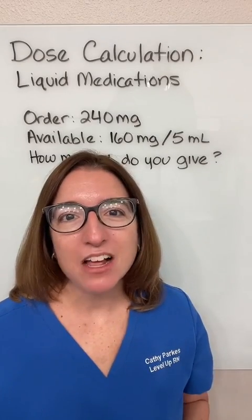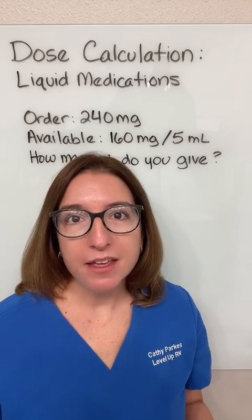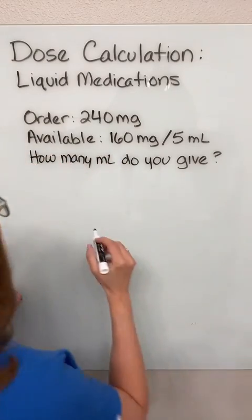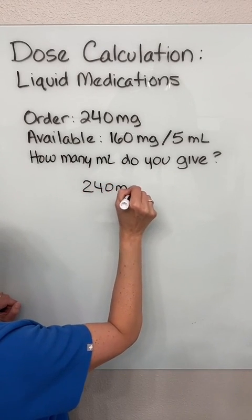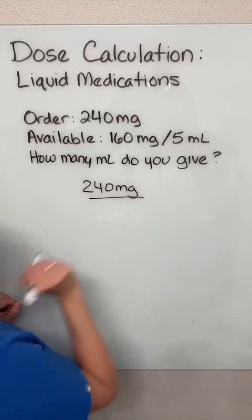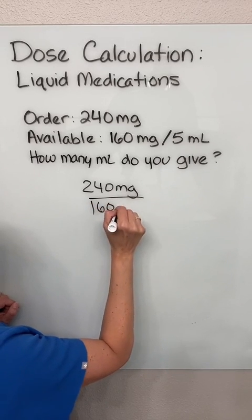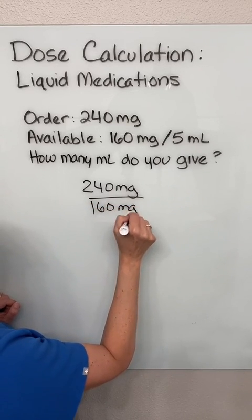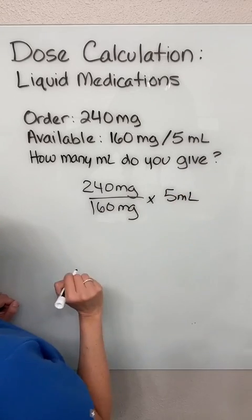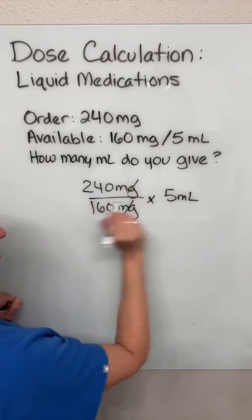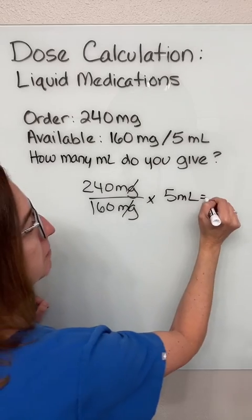Finally, let's solve this with the formula method. The formula method has desired over have times the vehicle. So we are desiring 240 milligrams, and what we have is 160 milligrams in 5 mLs of solution. Our milligrams will cross off, and if we do this math, we end up with 7.5 milliliters.